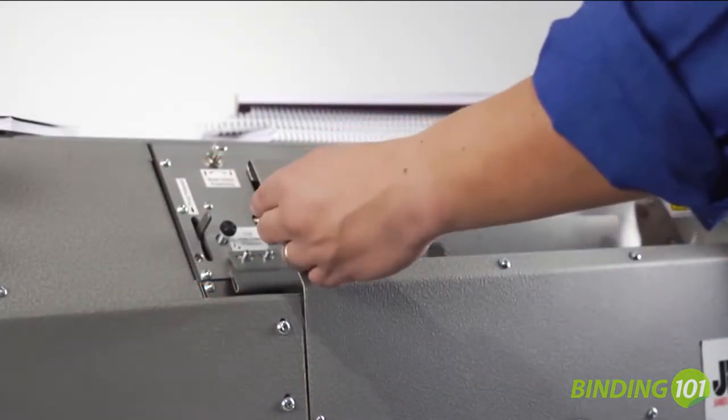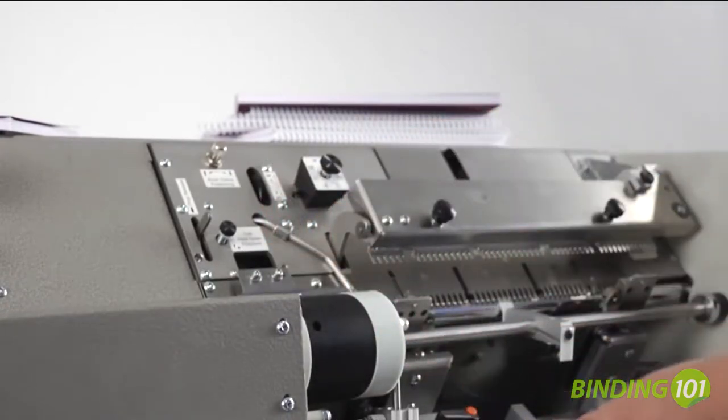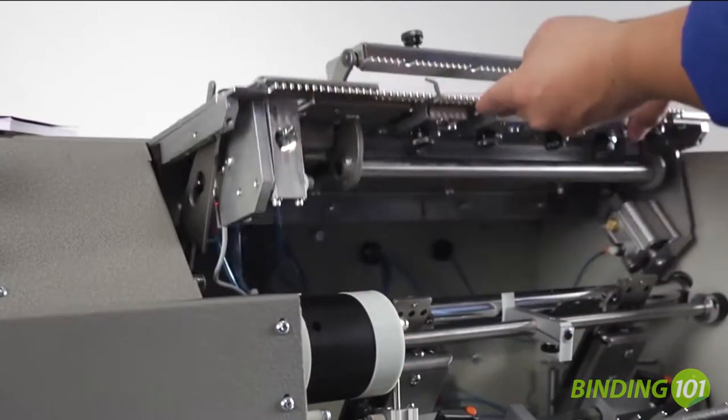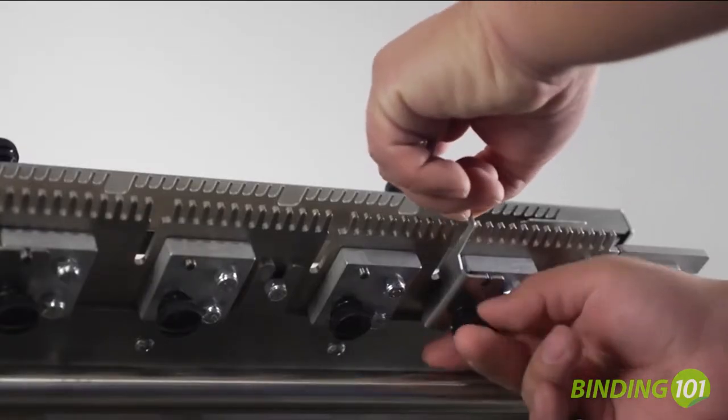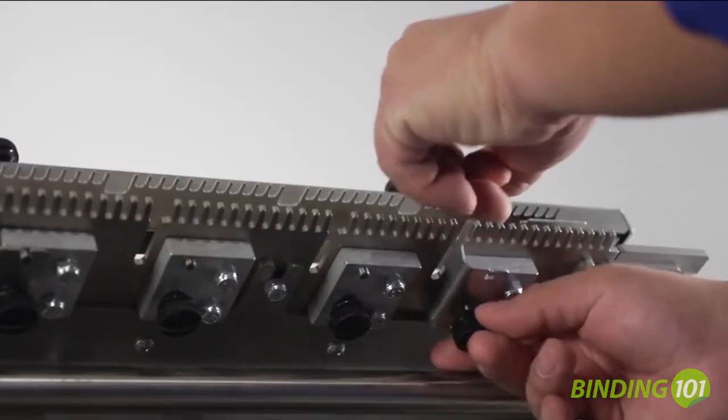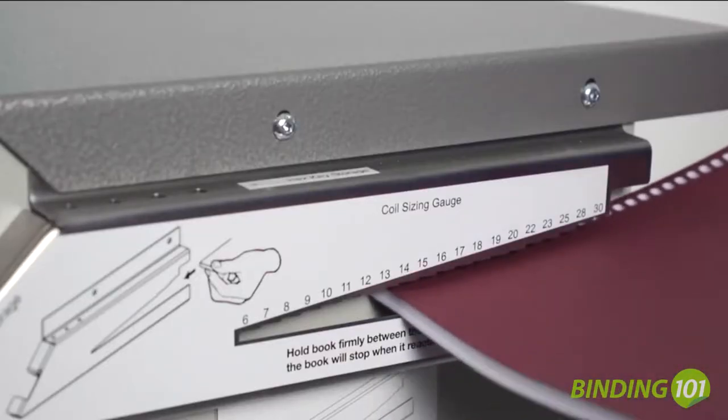The QS in CB30QS stands for Quick Setup, and that's what this machine delivers. No tools are required for basic setup. Changeover between jobs takes only minutes with the unique coil sizing and carriage adjustment gauge.